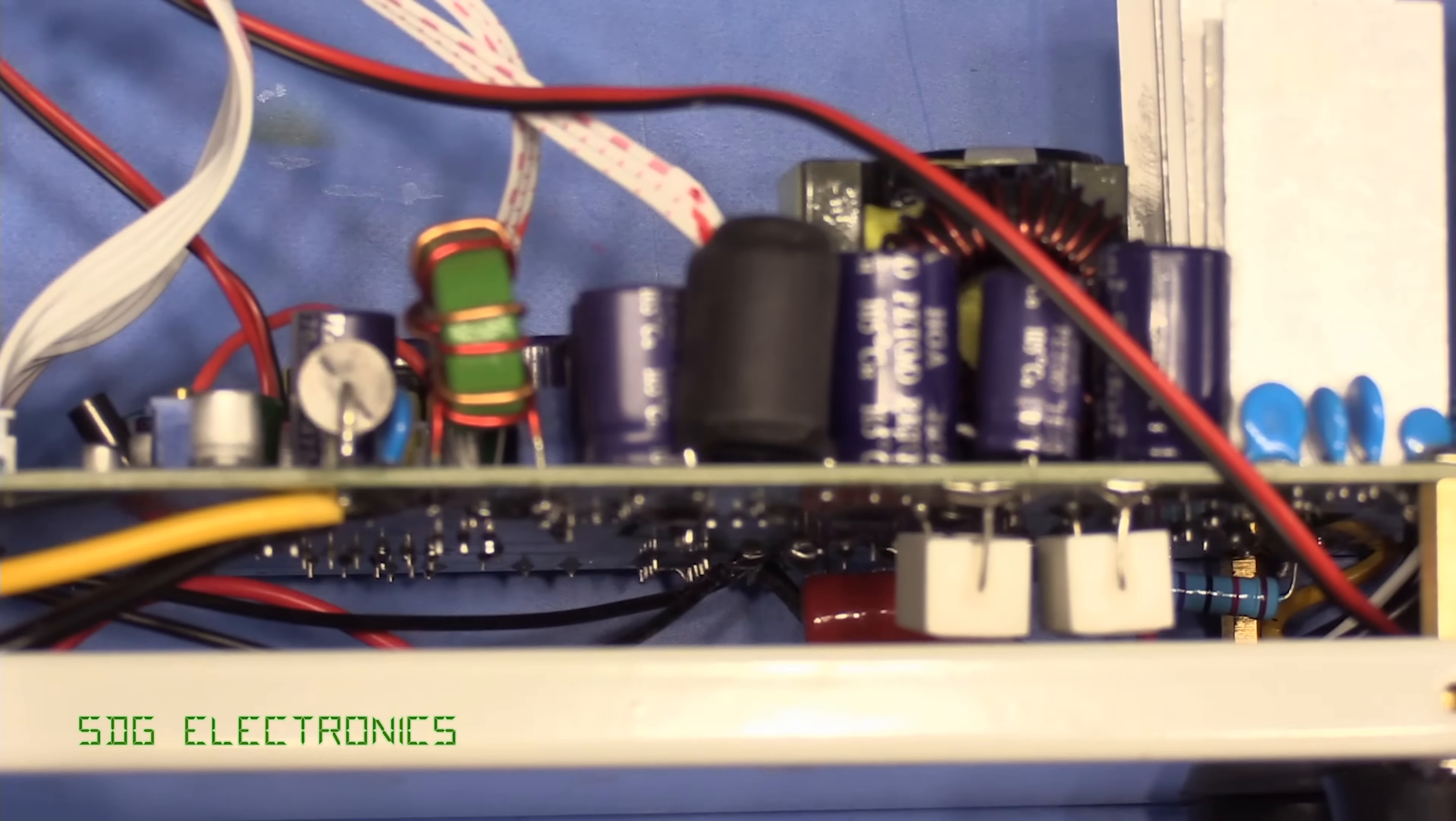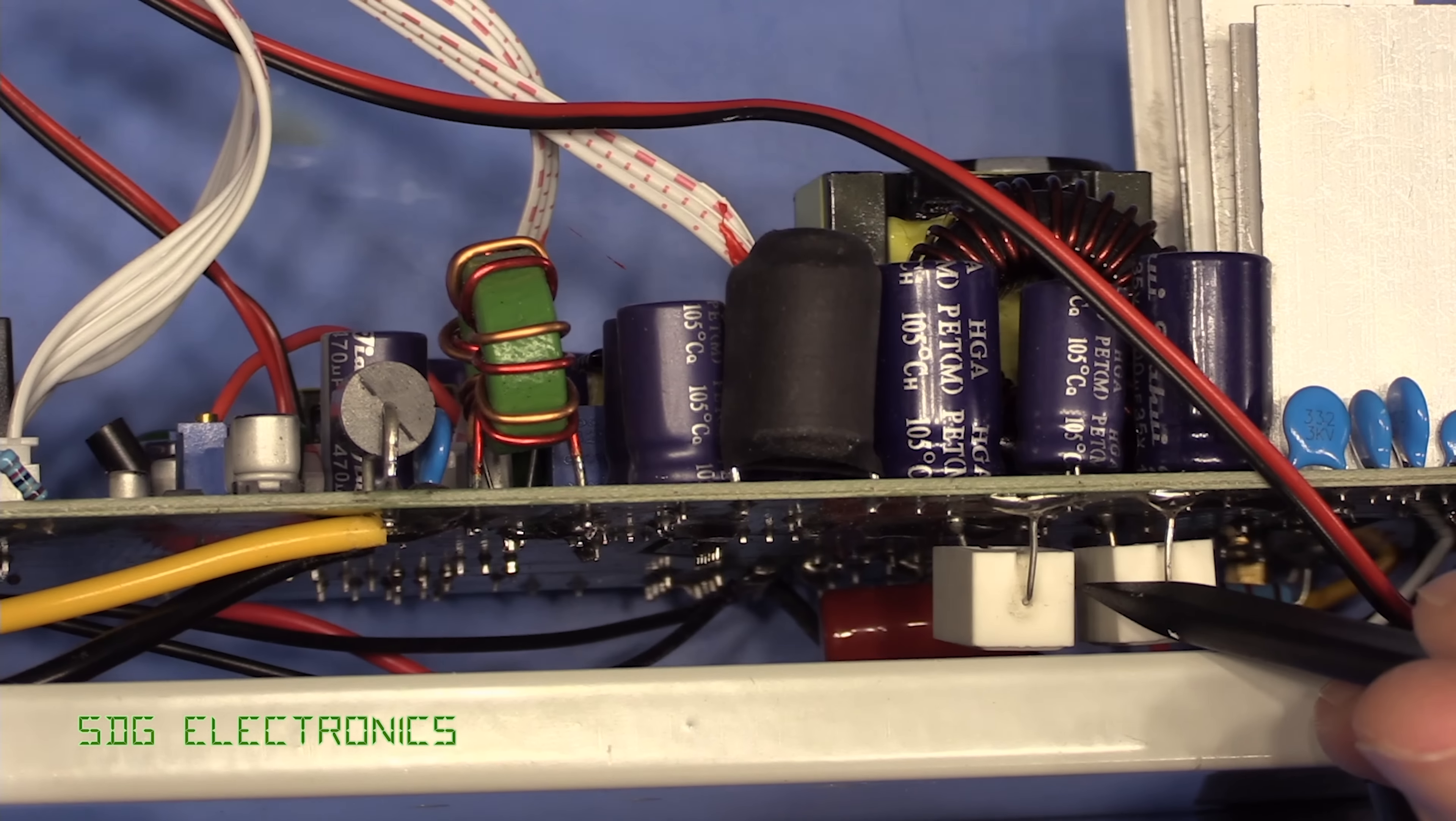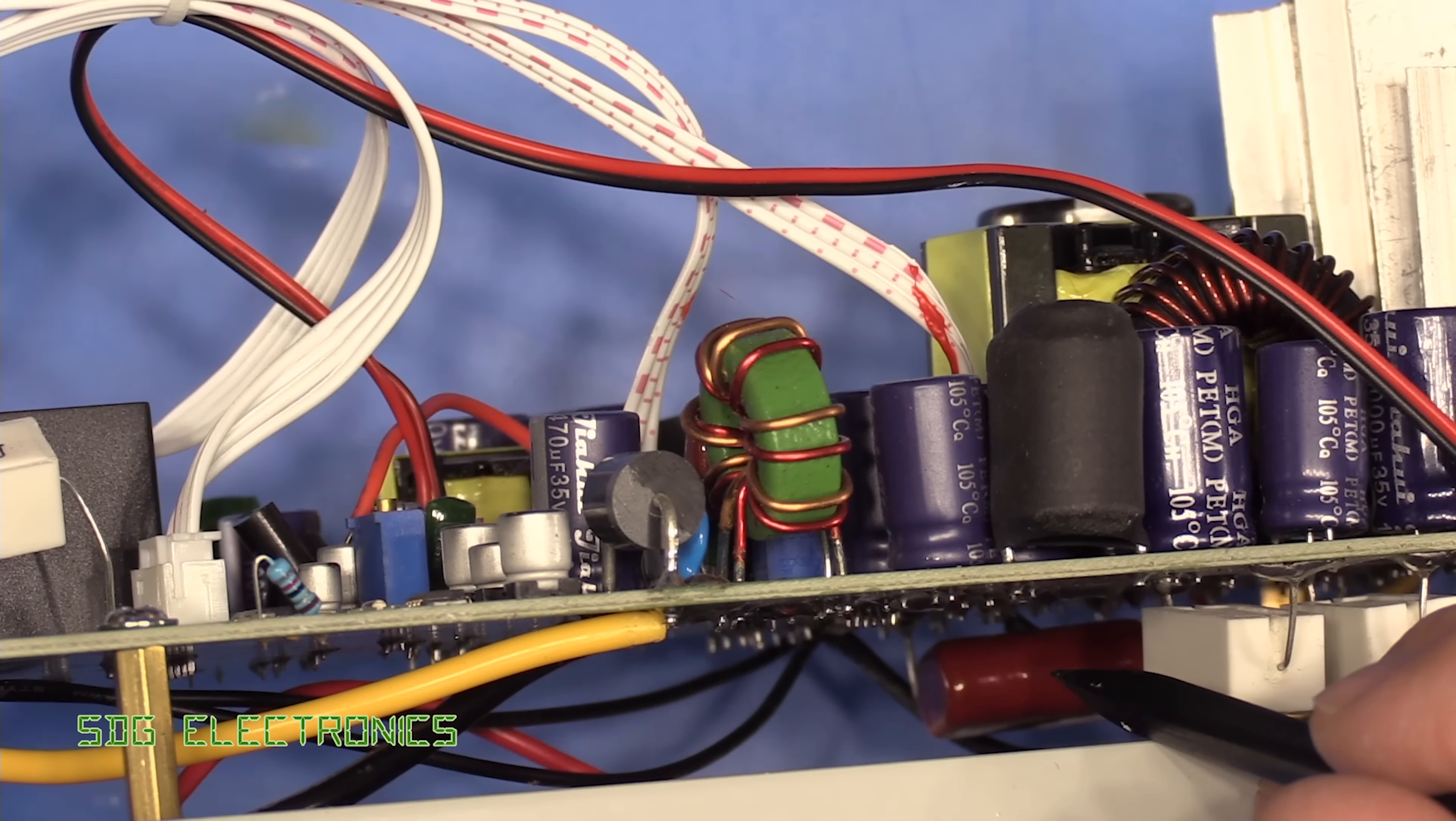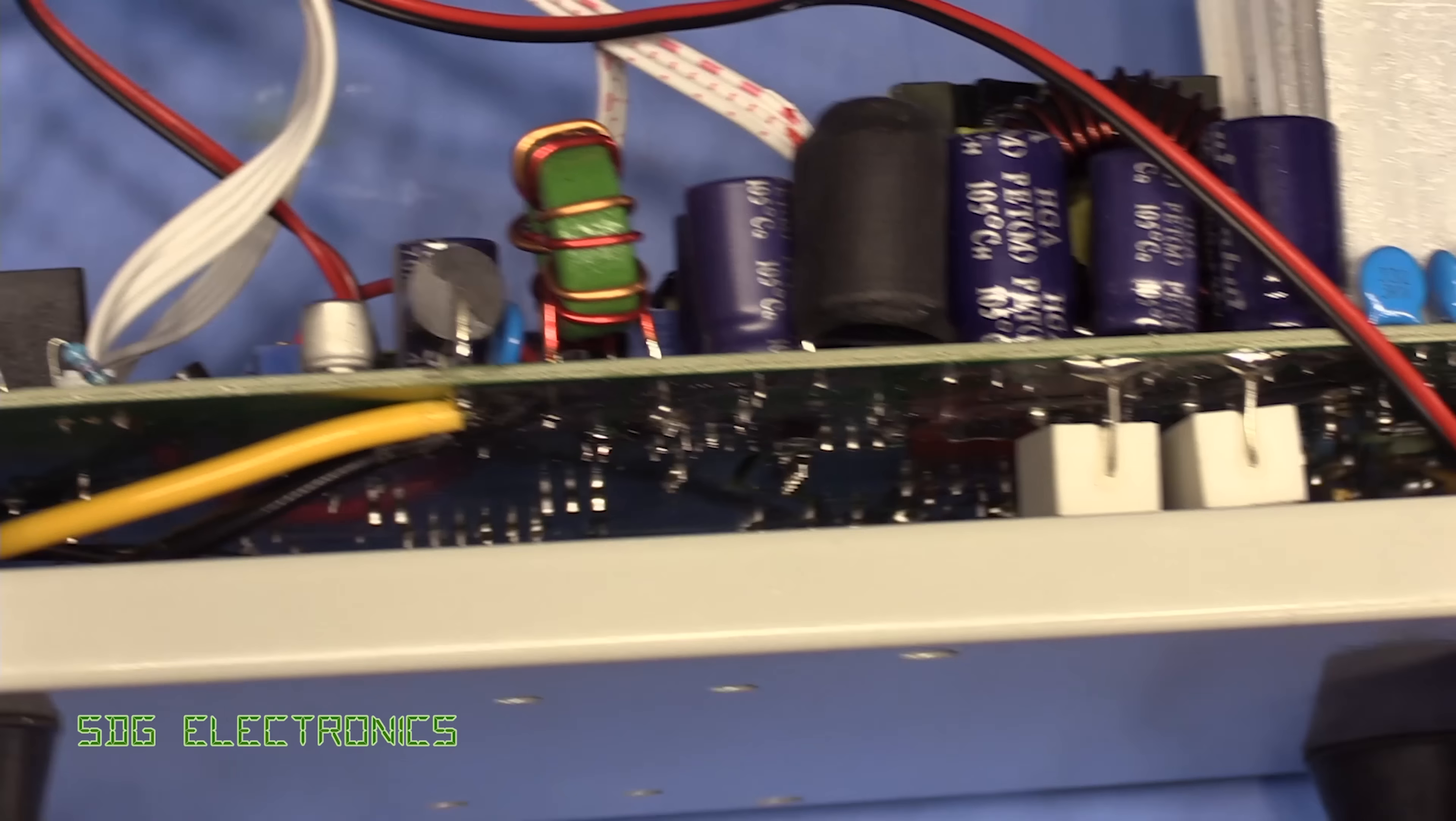But yeah, a few components mounted underneath. A couple of wire wound resistors probably for the control loop or for dissipating a bit of power. And we've got a capacitor underneath. That must be for filtering. That's on the AC input. Yeah, not too bad.